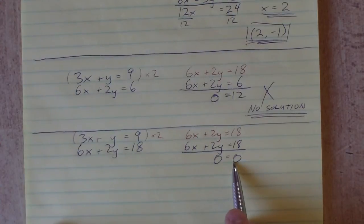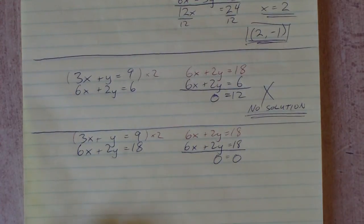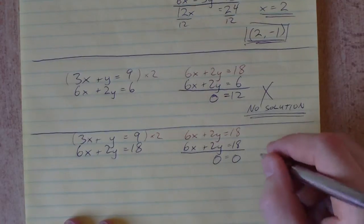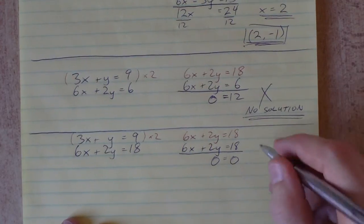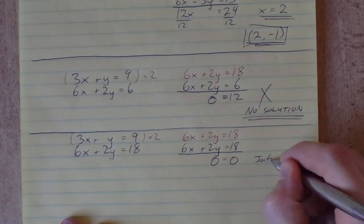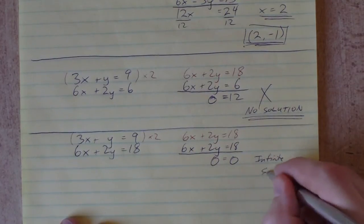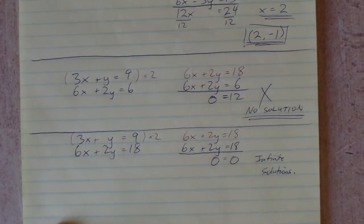This is a true statement, so there is a solution, but we can't find what that solution is. The reason being, if we're going to graph these, we're going to find that these two lines are actually the same line, and there are actually infinite solutions because these two things are the same line.